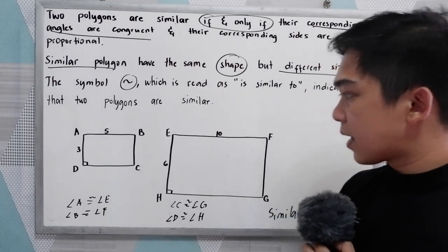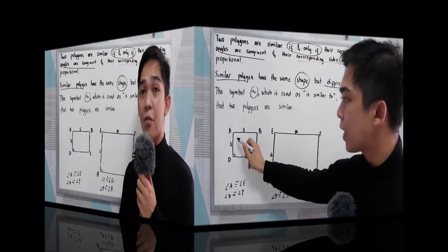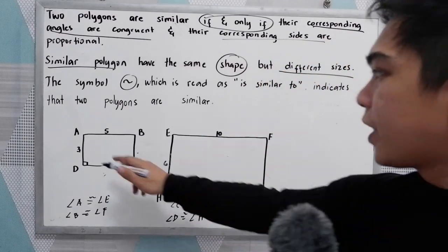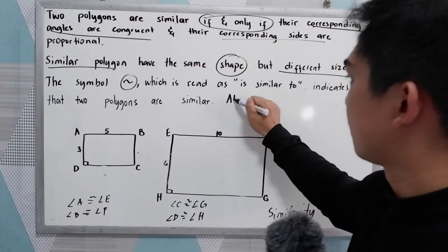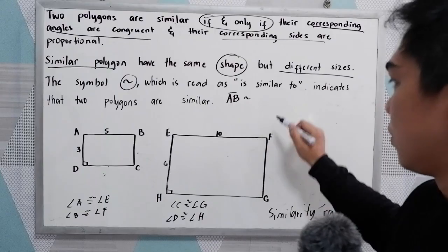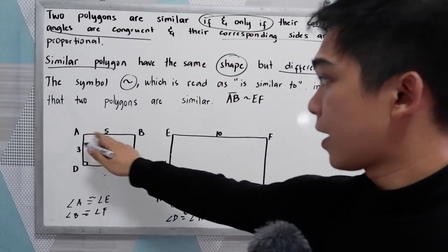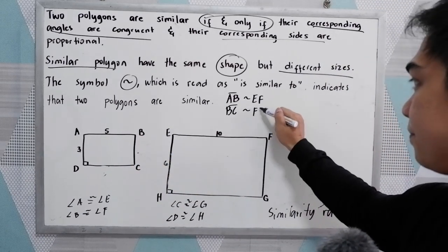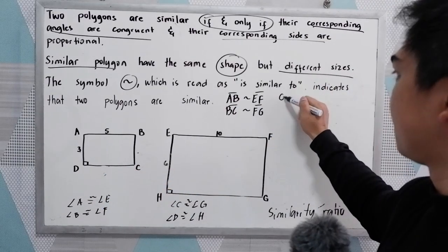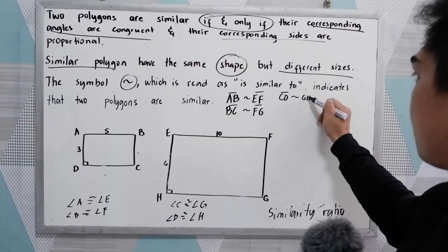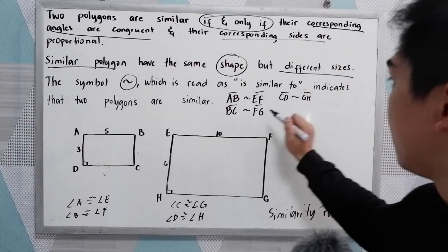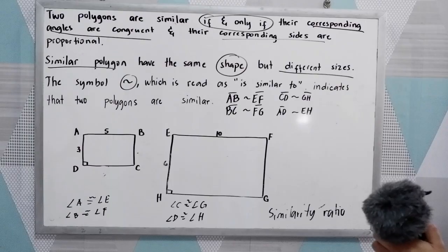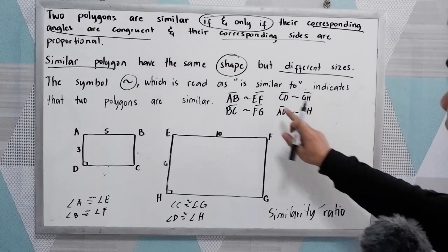After finding the congruent angles, we find the corresponding sides. Side AB corresponds to EF. Side BC corresponds to FG. Side CD corresponds to GH. And side AD corresponds to EH.